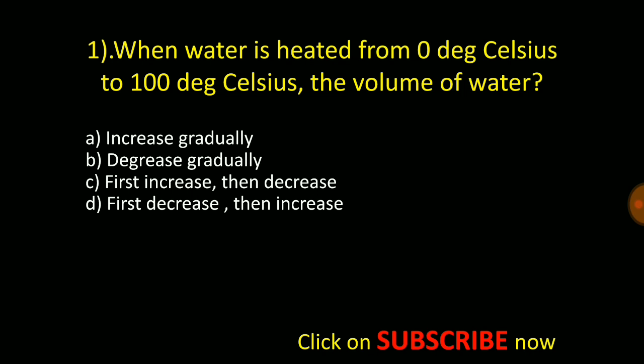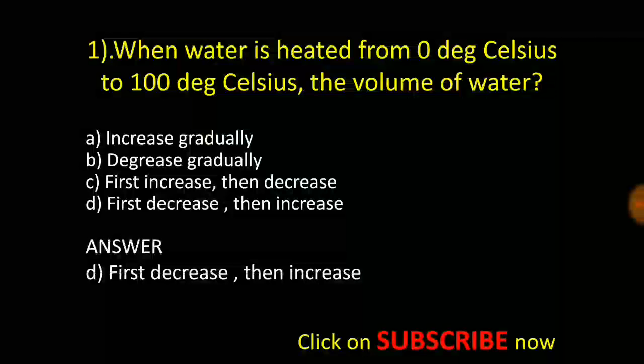When water is heated from zero degrees Celsius to hundred degrees Celsius, the volume of water: increases gradually, decreases gradually, first increases then decreases, or first decreases then increases. And the answer is it first decreases then increases.